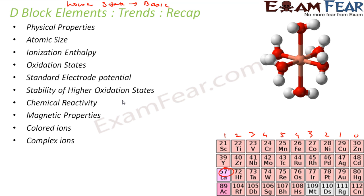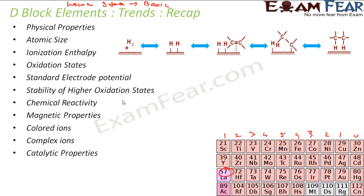Talking about the catalytic property: transition metals are well known for their catalytic activity. This is because they can adopt multiple oxidation states, they form various intermediate complexes, and they also have partially filled d orbitals which can easily provide space for adsorption of reactants, thus increasing the rate of reaction.